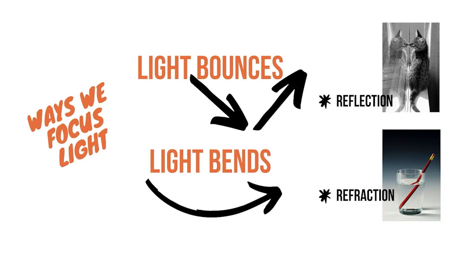The other property we make use of is the fact that light bends as it moves from a medium of a certain density to a medium of a different density, such as when light moves from air to water, or through glass of different levels of thickness. These two properties combined — the fact that light bounces and light bends — allows us to get the light exactly where we want, with very little of it wasted.